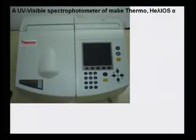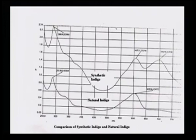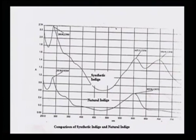This is how the UV spectrophotometer looks — a picture is shown so you can identify this model of UV spectrophotometer. When a spectrum is evaluated, this is a typical UV spectrum of synthetic indigo and natural indigo. A layman looking at these two lines — one indicating synthetic indigo and the other indicating natural indigo — would say they look more or less similar, but they are not really similar.